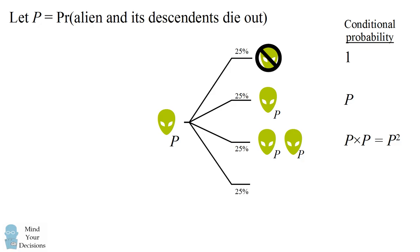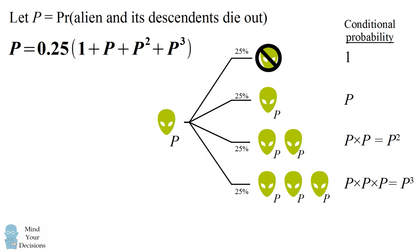In the final 25% case, the alien replicates itself two times, giving three aliens total. Each of these aliens has a probability P of dying out, and since each branch is independent, the probability that all three die out equals P times P times P, which is P cubed. So if the probability P exists, it must satisfy the equation: P equals 0.25 times the quantity (1 plus P plus P squared plus P cubed). In the theory of statistical branching processes, the probability of extinction equals the smallest positive root of this equation, which is the square root of 2 minus 1, approximately 41.4%. And that's the answer.